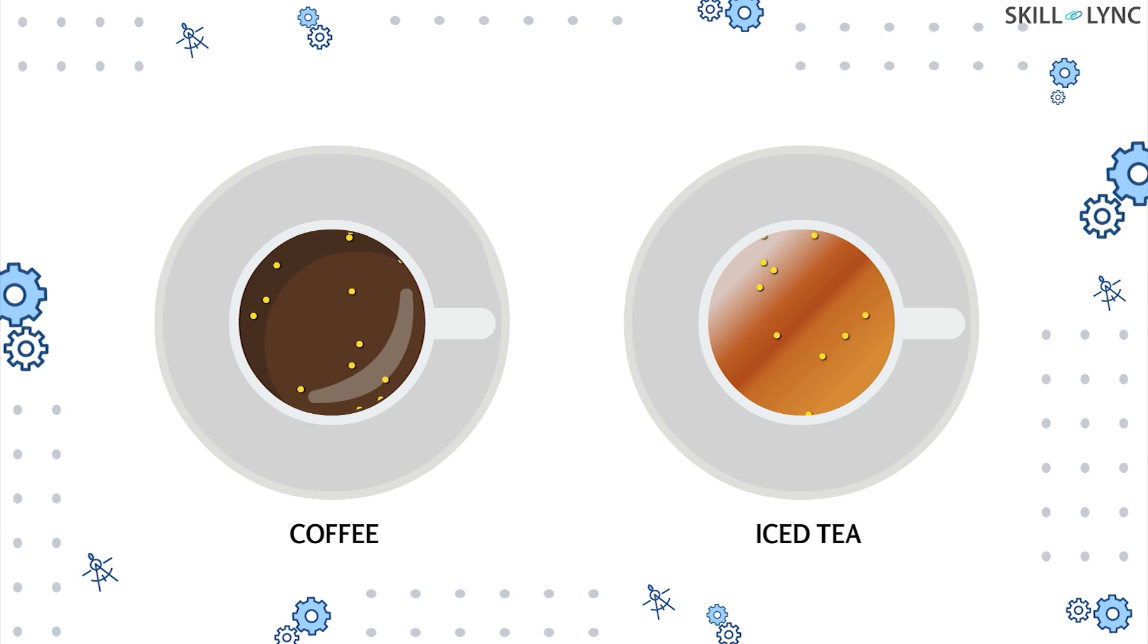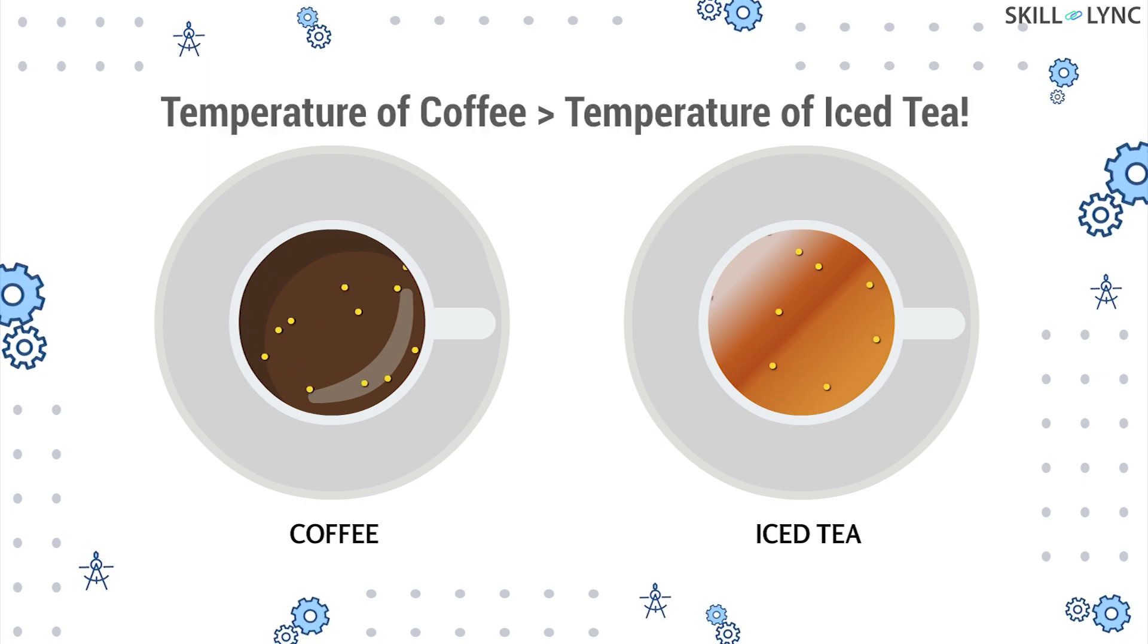The average kinetic energy is higher for water molecules in the cup of coffee when compared to the energy of the water molecules in a cup of iced tea. This means that the water molecules in a cup of coffee are moving at a higher velocity and colliding with each other more frequently. Hence, the temperature of coffee is higher than that of iced tea.